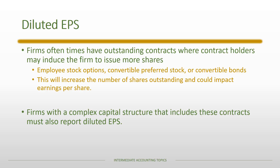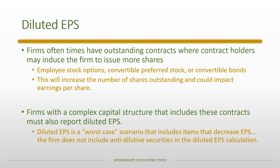Diluted EPS is really a worst-case scenario — how low could earnings per share be if these contracts were executed? These contracts are outstanding but no one has actually exercised their stock options or converted their preferred stock or bonds; it's a what-if analysis. In accounting, we only include items that would reduce earnings per share. If something is anti-dilutive — meaning it would increase EPS — we do not include it in the diluted EPS calculation.